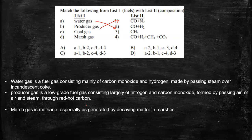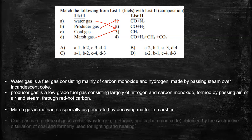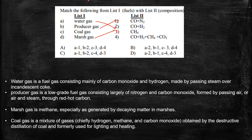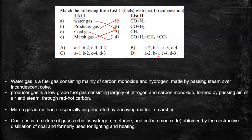Third, marsh gas is just methane and this is generated from decaying marshes. It is as the name suggests. Obviously, therefore, coal gas is a mixture of hydrogen, methane and carbon monoxide and carbon dioxide also because it is a side product and it is obtained by destructive distillation of coal and formerly used for lighting and heating.